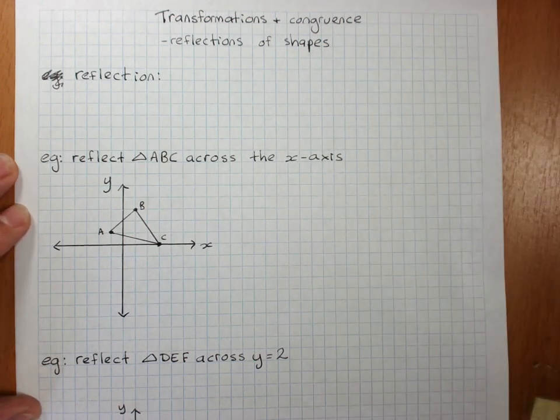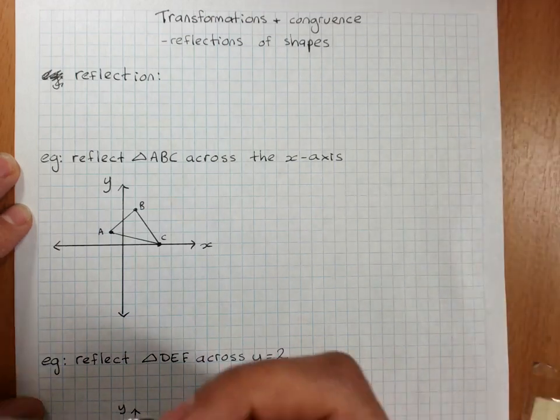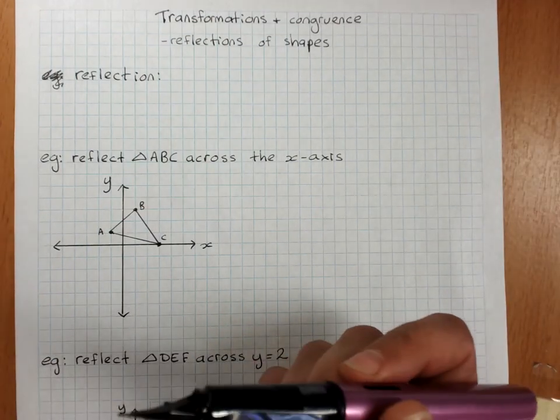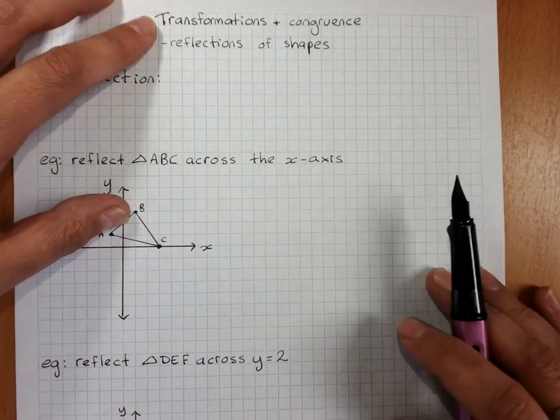Transformations and congruence. Reflections of shapes. A reflection - you'll remember we're looking at the three different types of transformations that make congruent shapes.